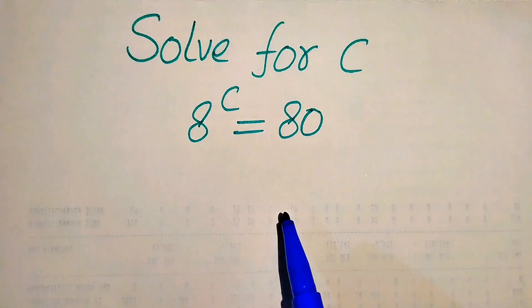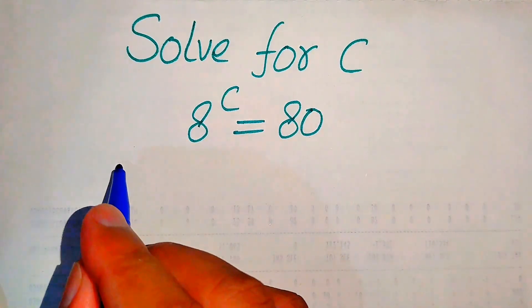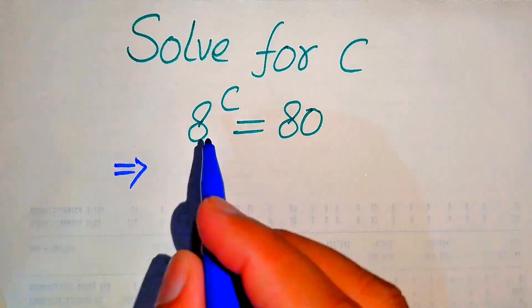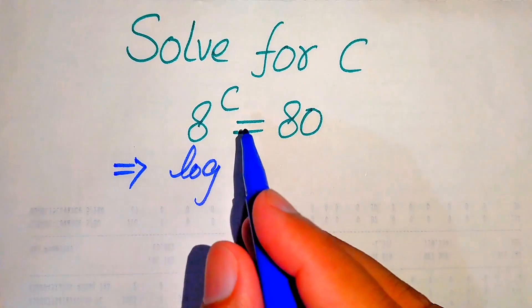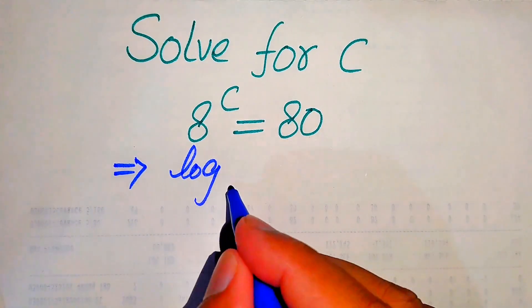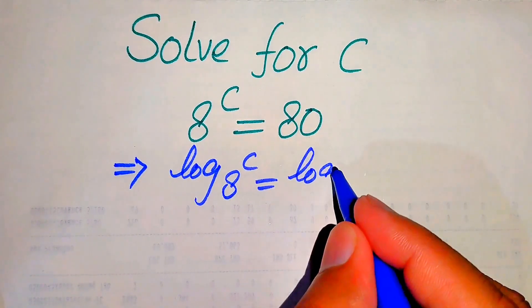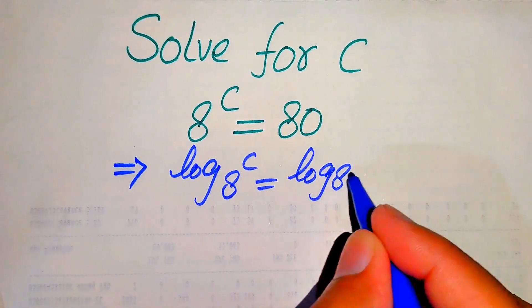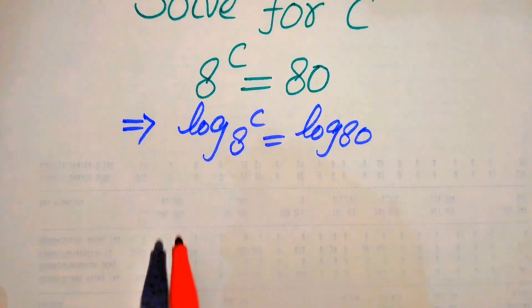In order to solve this exponential equation we need logarithm, so we will take the log on both sides. After taking this log it will be written as: log of 8 to the power of C is equals to log of 80. In the next step we use a nice property of log.